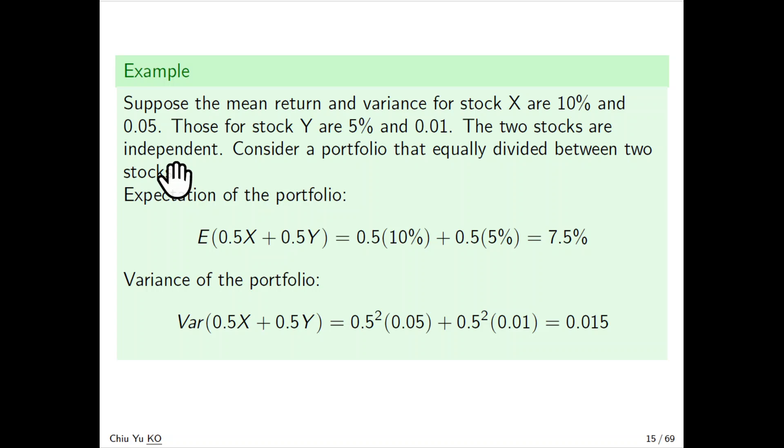Suppose a portfolio is divided equally between two stocks. The portfolio return will be Z = 0.5X + 0.5Y.